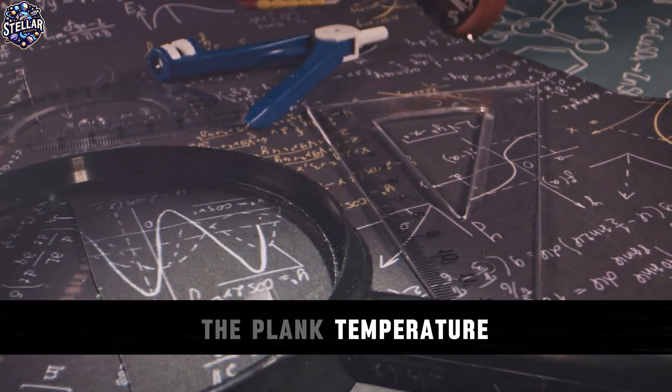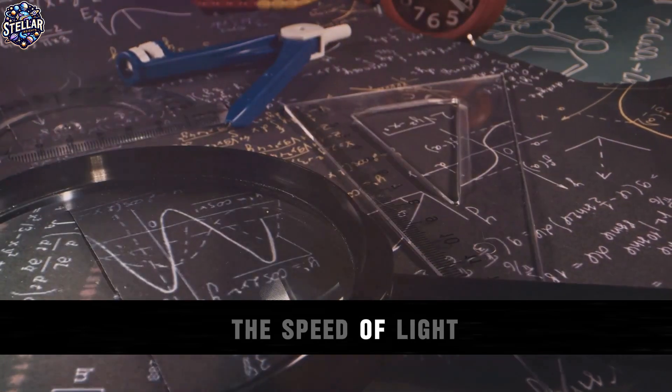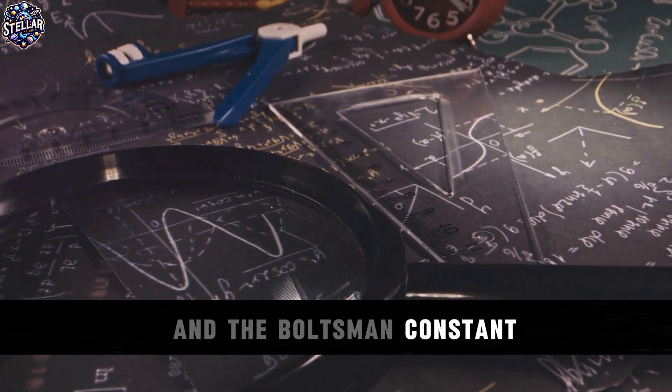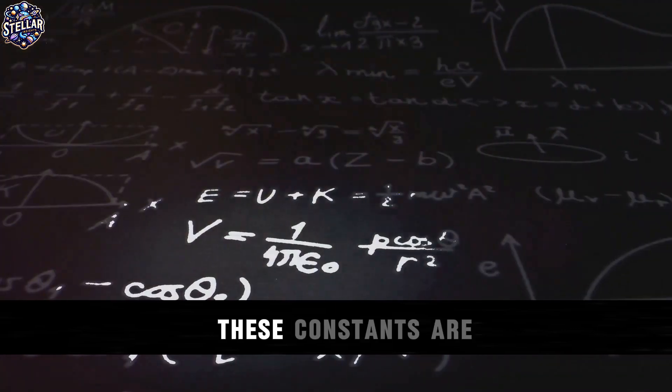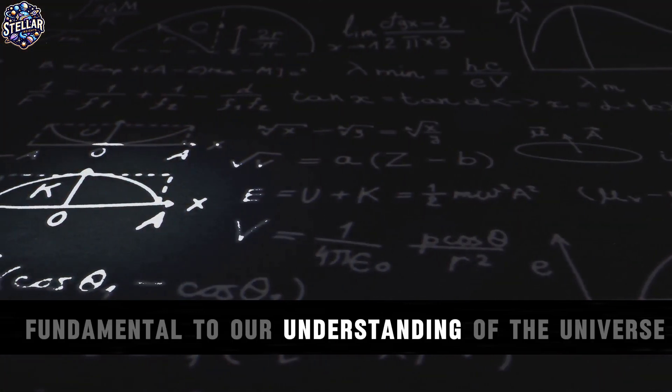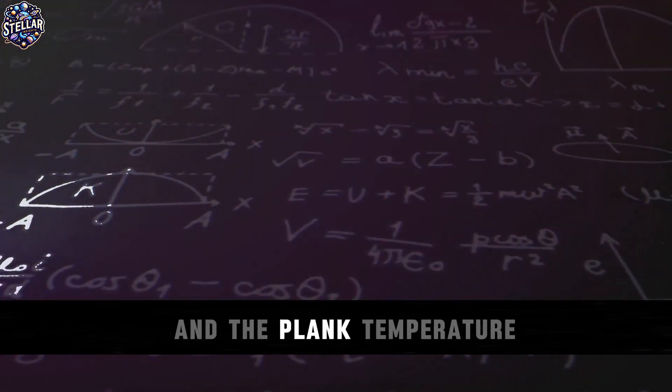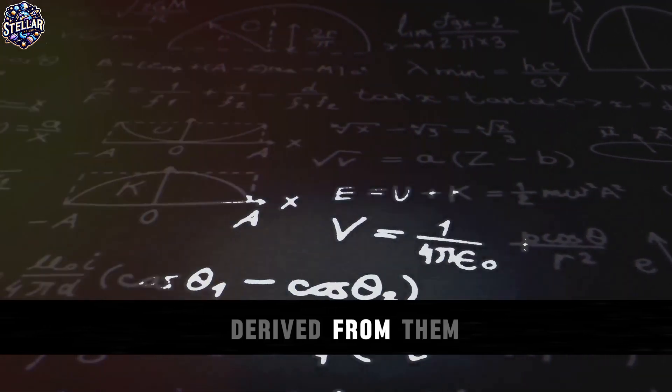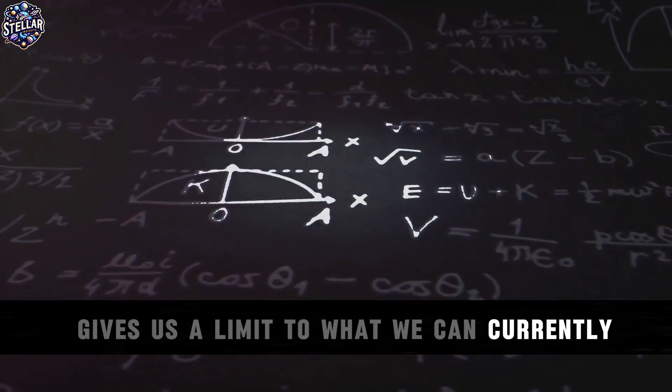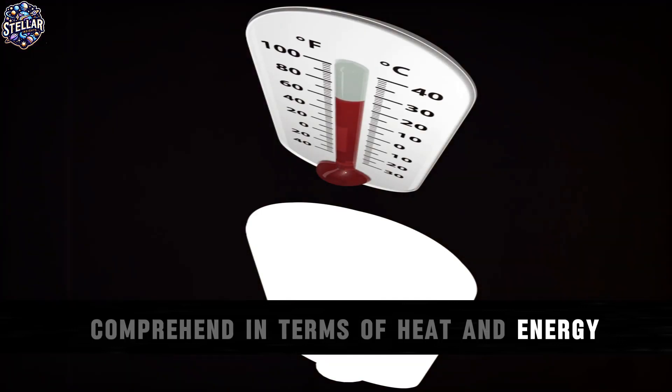The Planck temperature is derived from the Planck constant, the speed of light, and the Boltzmann constant, among others. These constants are fundamental to our understanding of the universe, and the Planck temperature gives us a limit to what we can currently comprehend in terms of heat and energy.